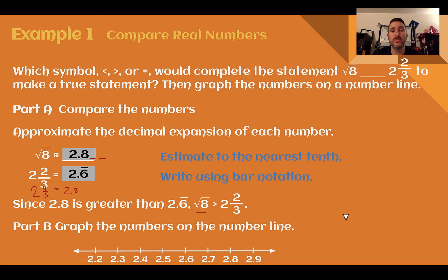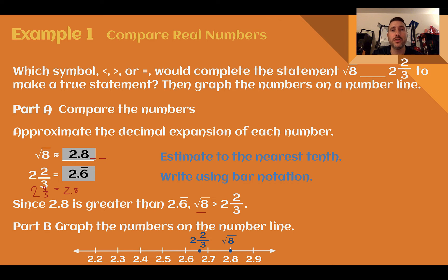Part B: graph the numbers on the number line. The square root of 8 was at about 2.8 — maybe a little bit further to the right. And 2 and 2 thirds, or 2.6 repeating, would be just over halfway between 2.6 and 2.7.